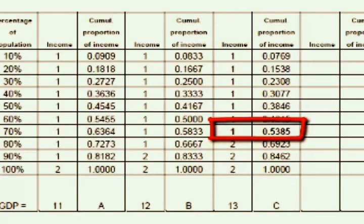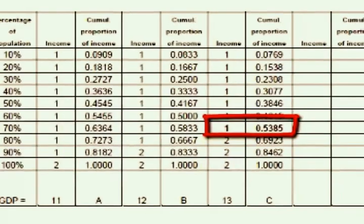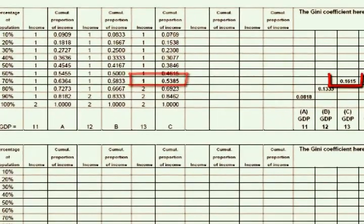Since 70% of the population should earn 70% of income if it were evenly distributed, the gap is 70% minus 53.8%, which equals 16.2%. So the Gini coefficient went from 13.3% to 16.2%. This is very important.